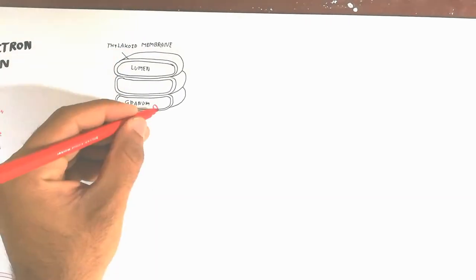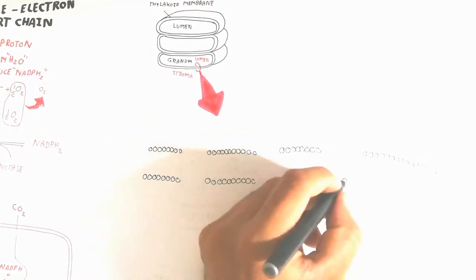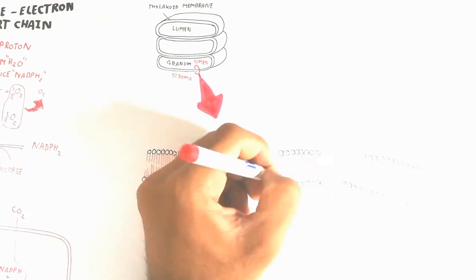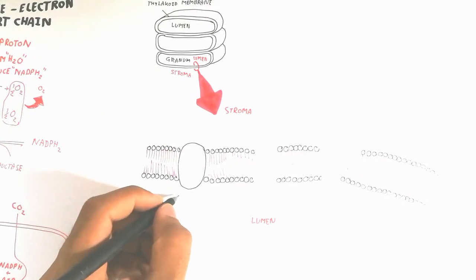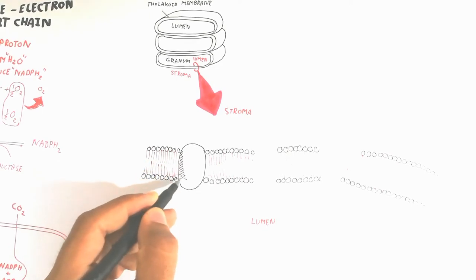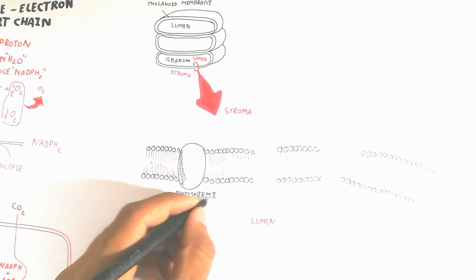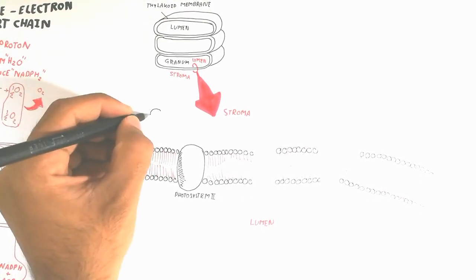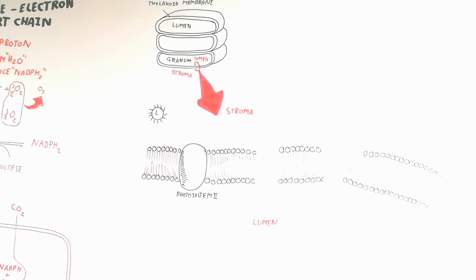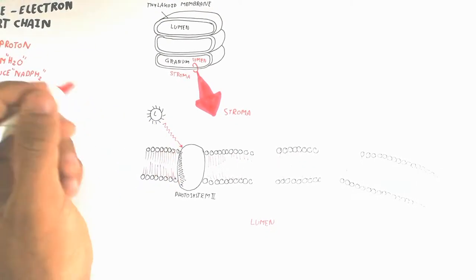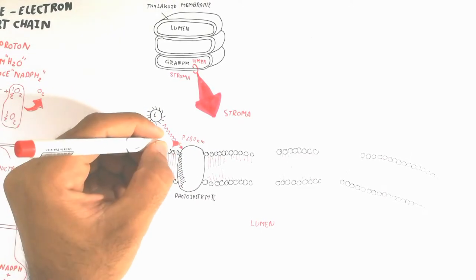Now we will discuss the thylakoid membrane structure and biochemistry. The inside is called the lumen and the outside is the stroma. A single unit is a granum, and multiple together are grana. The thylakoid membrane contains Photosystem 2, which is associated with the oxygen evolving complex. Water is used in this process.